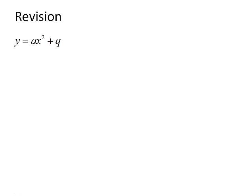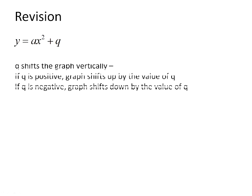You learnt that the standard form of the parabola, or the quadratic function, is y is equal to ax squared plus q. The q has the effect of shifting the graph vertically — in other words, it shifts the graph up and down. If q is positive, the graph will shift up by the value of q, and if q is negative, the graph will shift down by the value of q.